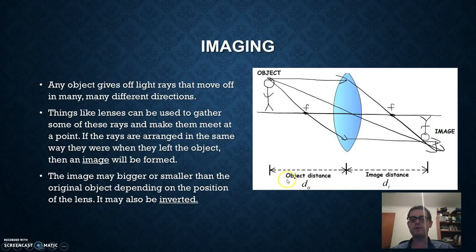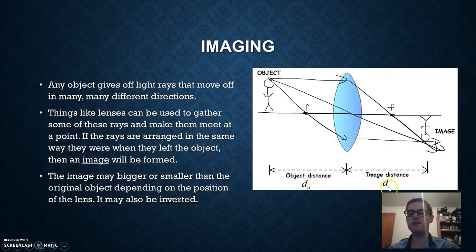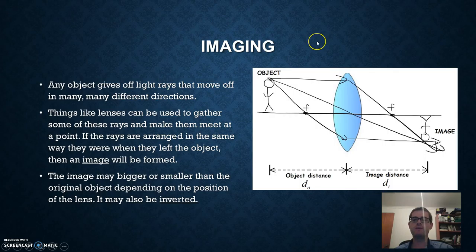This will come up in later videos: when we're talking about how images are formed, it depends a lot on the relative position of the object, the lens, and the image. So we need to know two things — object distance DO, and image distance DI. That's going to become more important when we look at ray tracing diagrams and how to solve problems with lenses in the next video.